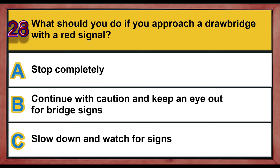Question 28. What should you do if you approach a drawbridge with a red signal? A. Stop completely. B. Continue with caution and keep an eye out for bridge signs. C. Slow down and watch for signs. Correct answer is A: Stop completely.